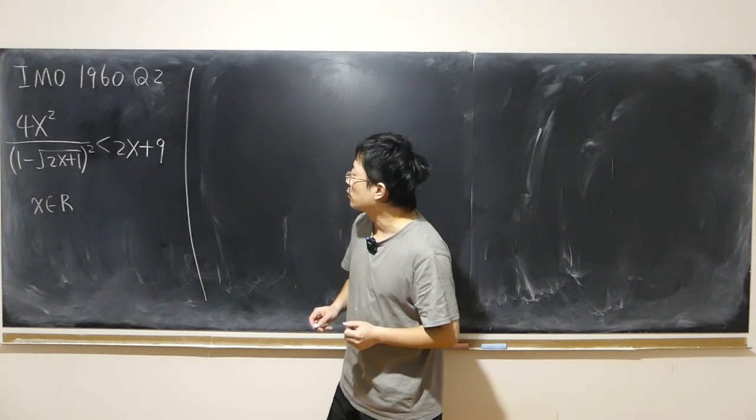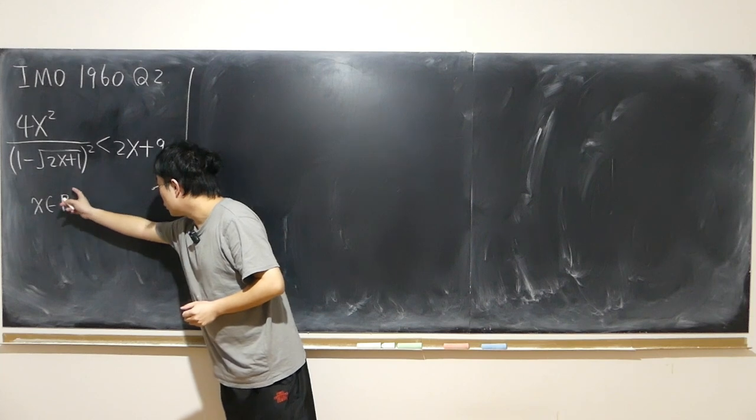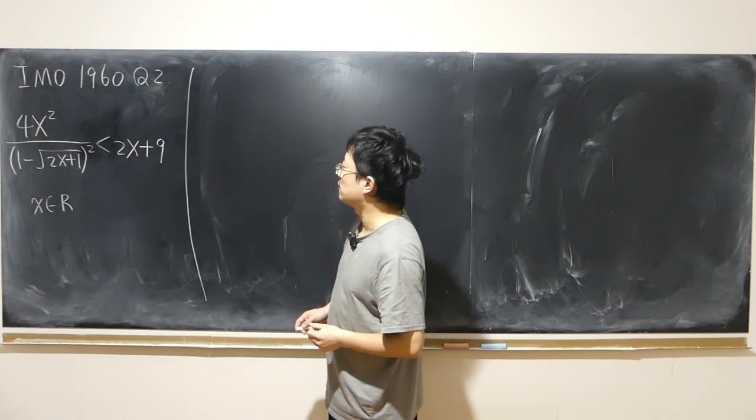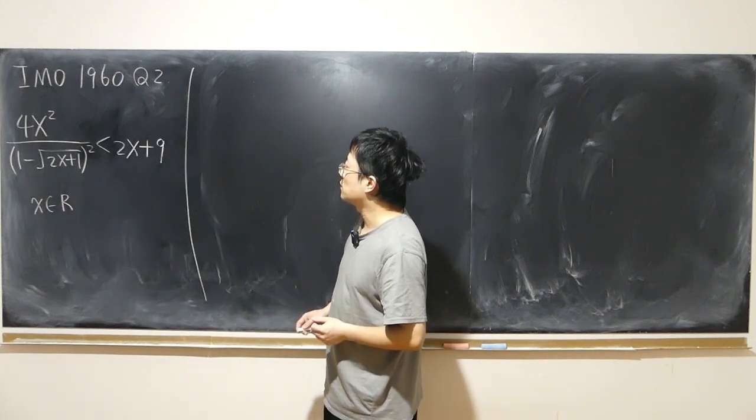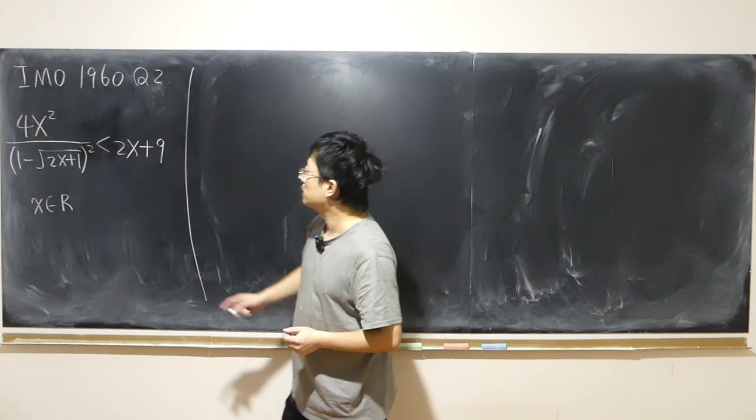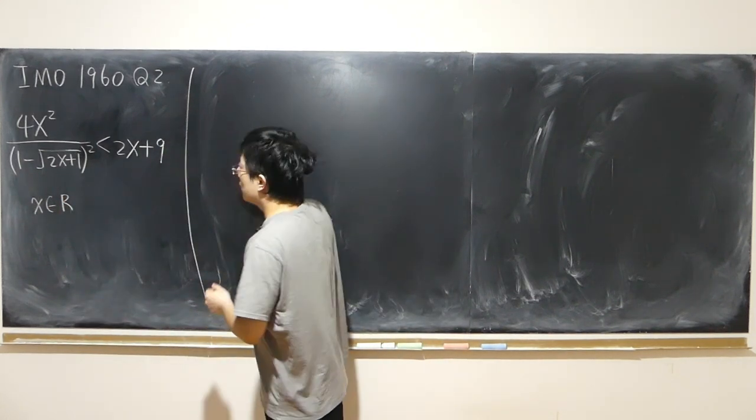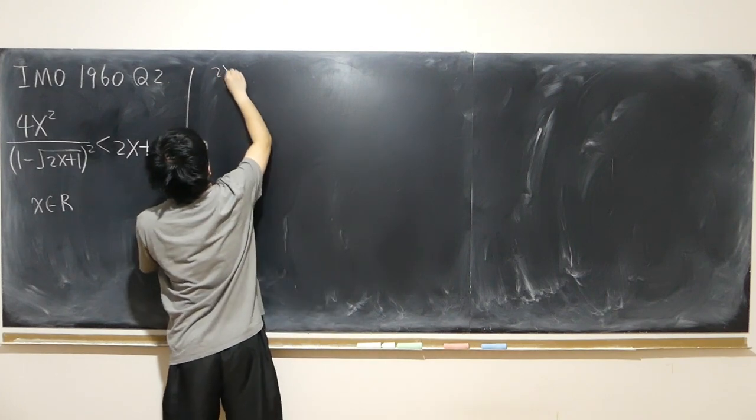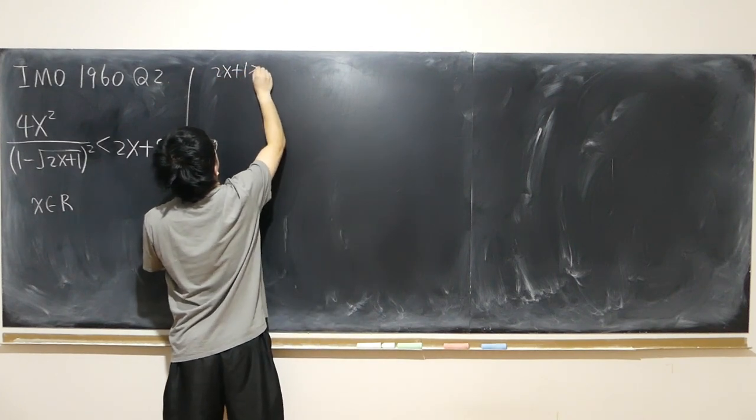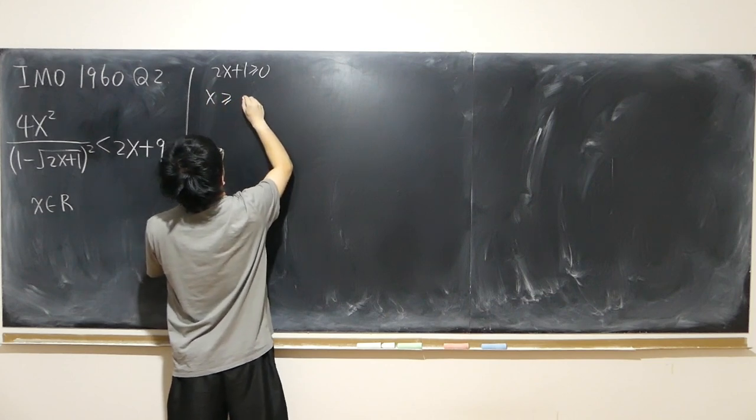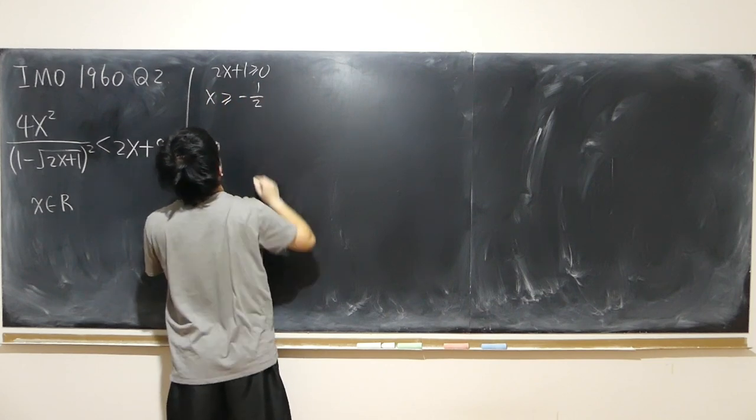So first of all, we want to find the range of the real value x that satisfies this inequality. The first thing I noticed is that the square root, inside the square root, cannot be negative. So first thing, 2x plus 1 non-negative, x bigger than negative half.